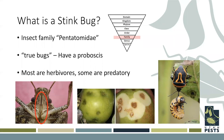Most stink bugs are herbivores, but not all of them. The pests we think of are all herbivores, but we do have some predatory ones, like the two-spotted stink bug on the right. There are also some beneficial stink bugs actively in our crops helping to control pest stink bugs. We can see some damage here — corky lesions — which they can cause on most crops. We'll have more pictures of that later on.